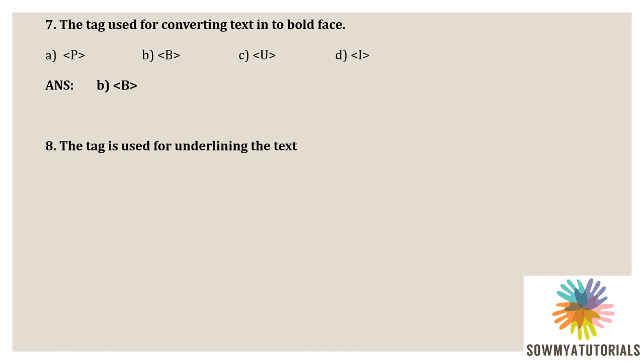The tag used for underlining the text. Option A: <b>. Option B: <u>. Option C: <i>. Option D: <bu>. The correct option is <u> — it is the tag used for underlining the text.